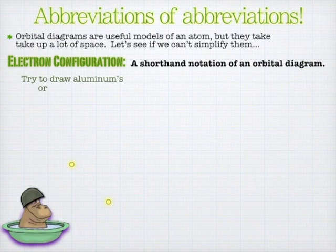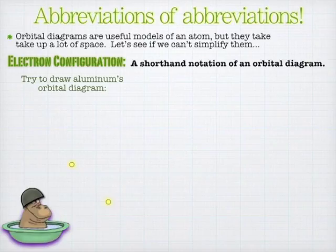Go ahead, take a moment. You can go ahead and try to draw aluminum's orbital diagram first, and then take a stab at aluminum's electron configuration. I'll wait for you.